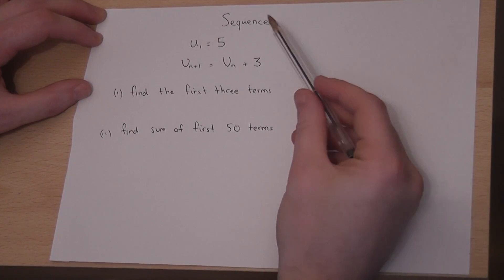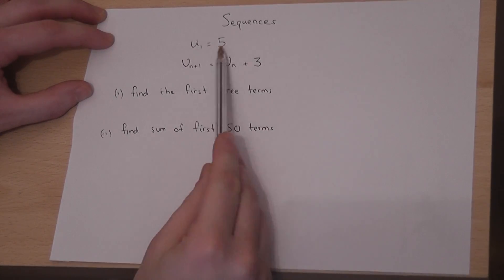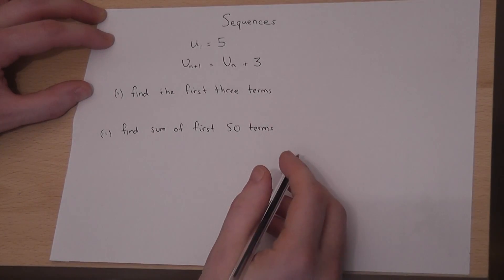This video looks at how we can define sequences using what's called an iteration. We know the first term. The first term equals 5.